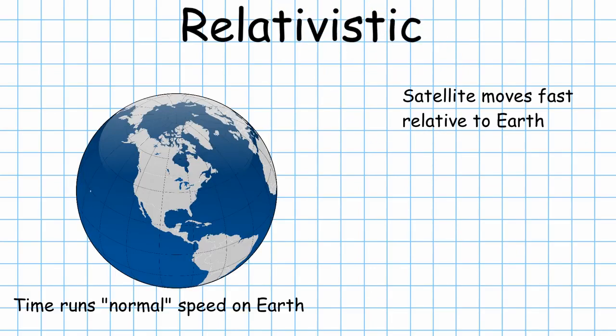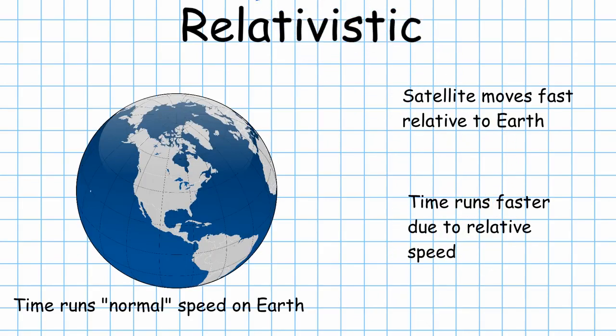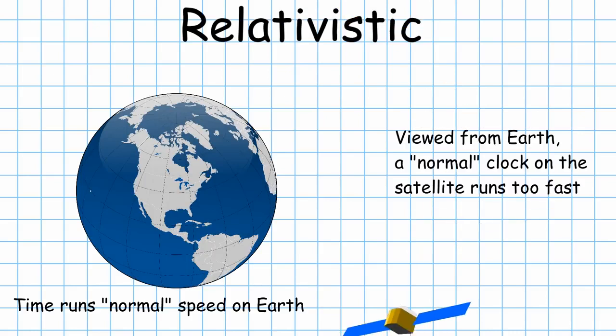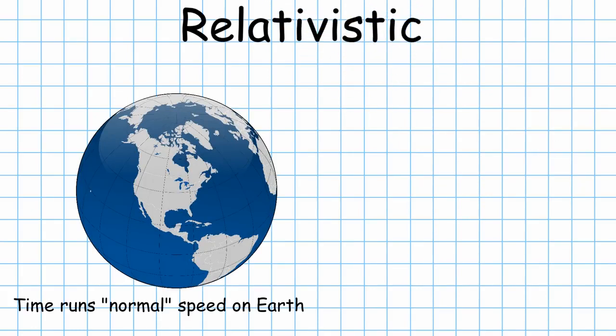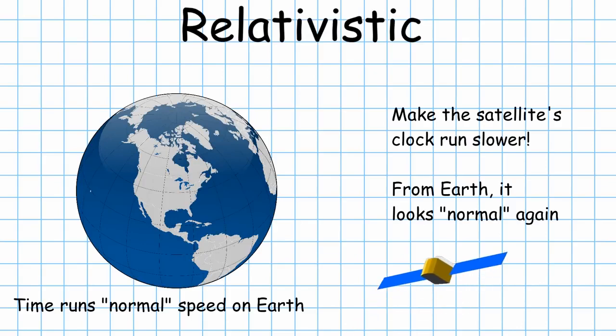Time on each satellite appears to run differently to time on Earth. On satellites, it actually runs slightly faster, so all the clocks will be turning that little bit quicker. To compensate for this, the clocks are programmed to run slightly slower than they would do on Earth. From the point of view of an observer on Earth, the clock is actually running at the right speed. Relativistic effects are still monitored from stations on Earth to ensure the system maintains its accuracy.